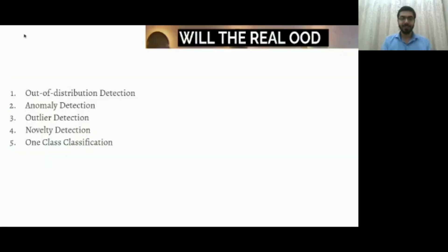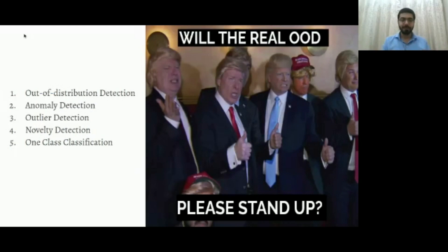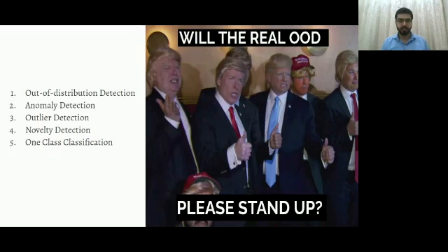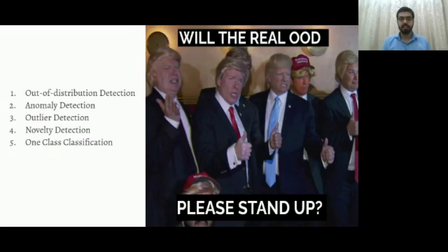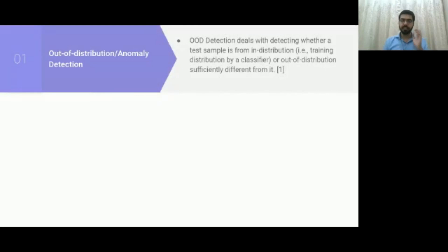What is OOD, or what is anomaly detection? Anomaly detection, outlier detection — there are so many different names for something that might belong to one field, and it sometimes gets confusing as to what somebody is talking about. There is out-of-distribution detection (OOD), anomaly detection, outlier detection, novelty detection, one-class classification — so much so that you don't know who's the real OOD. I'm trying to put these into different brackets so that it starts to make sense.